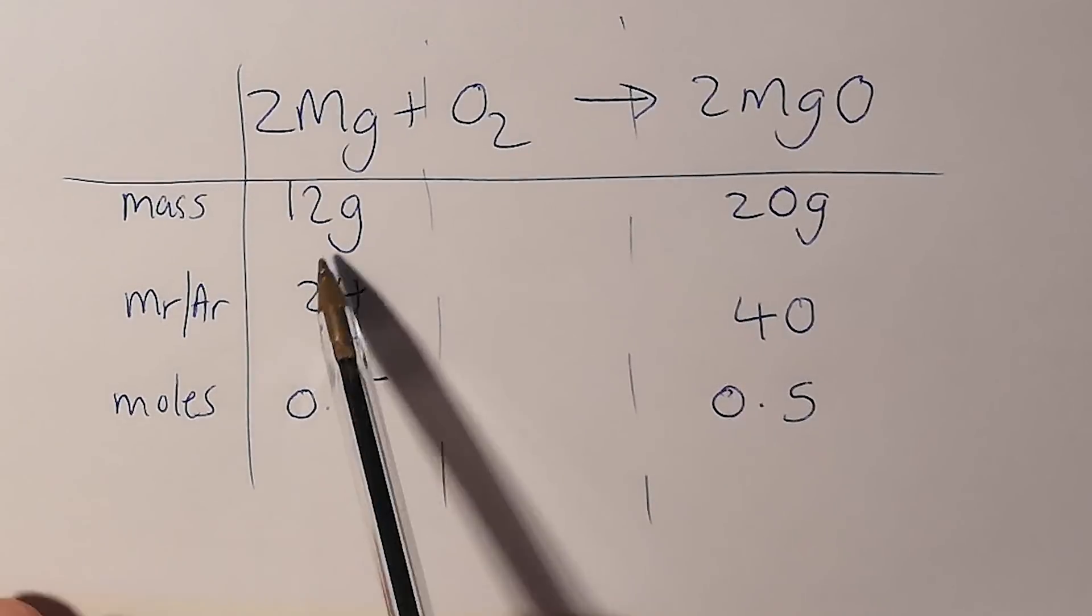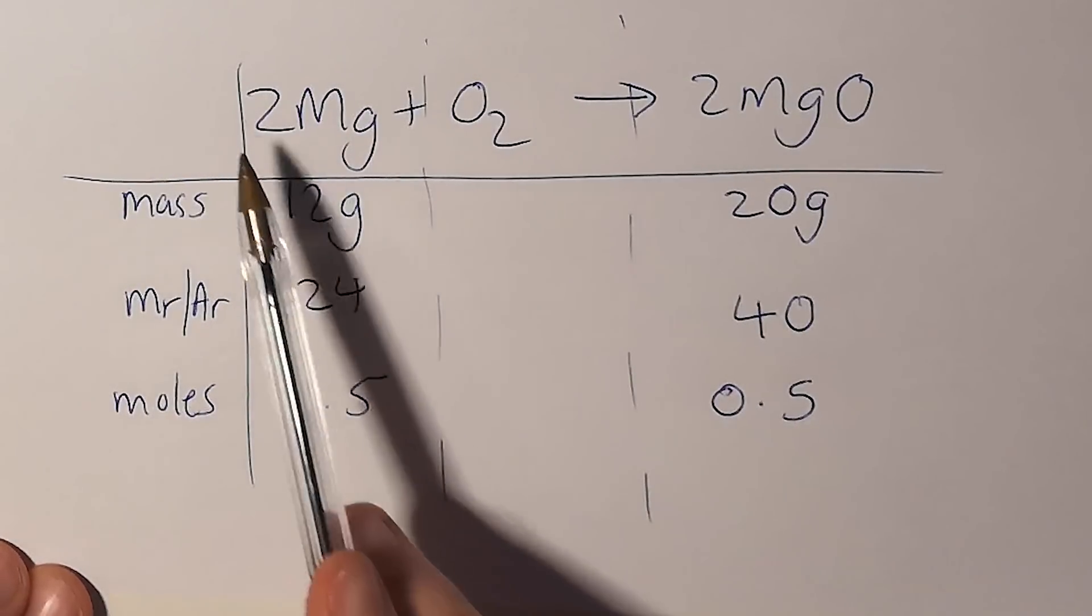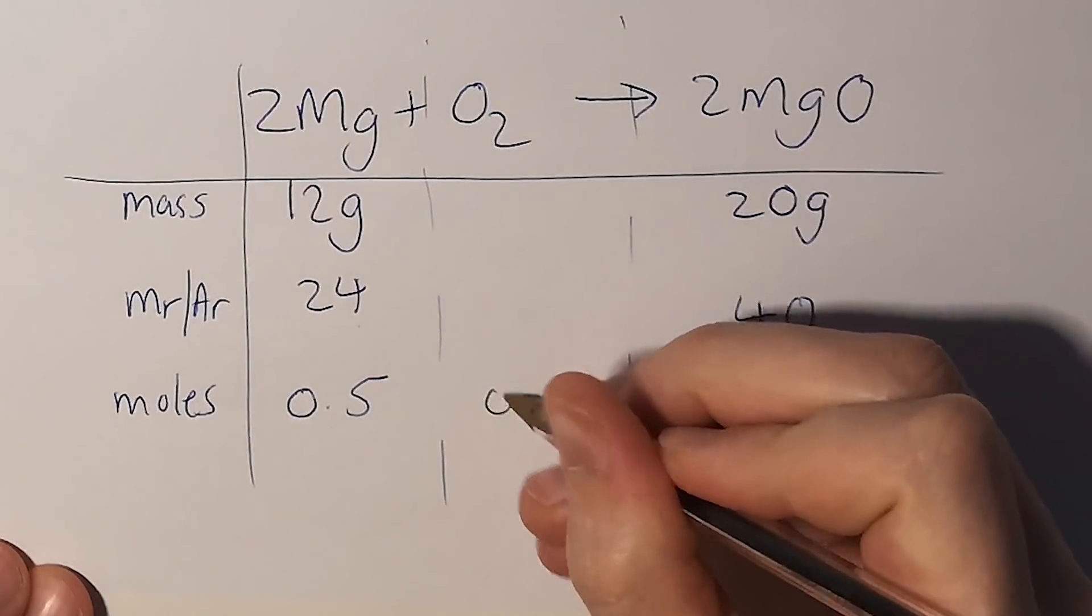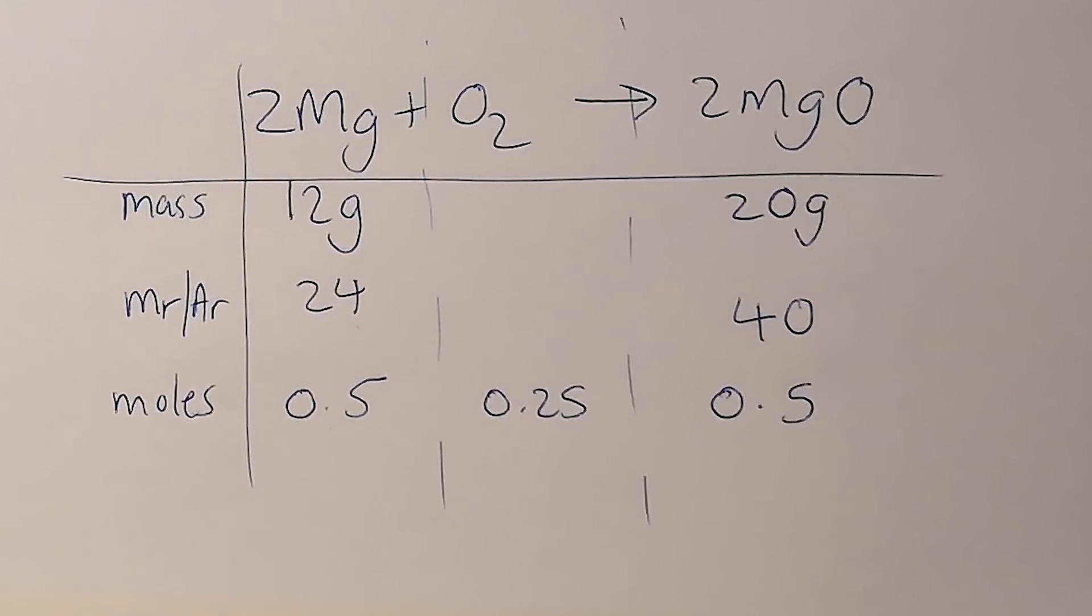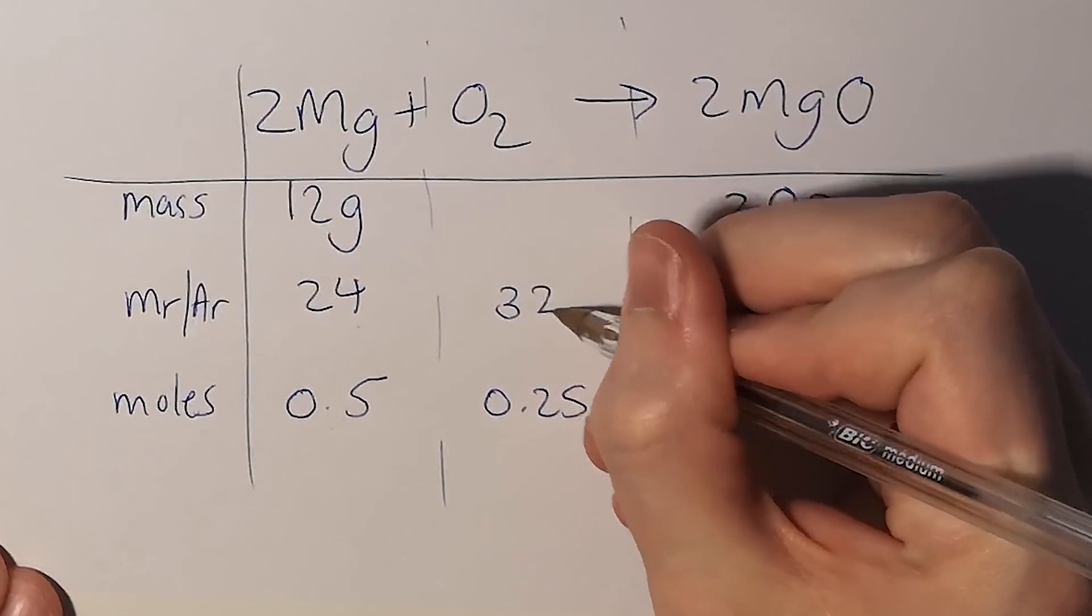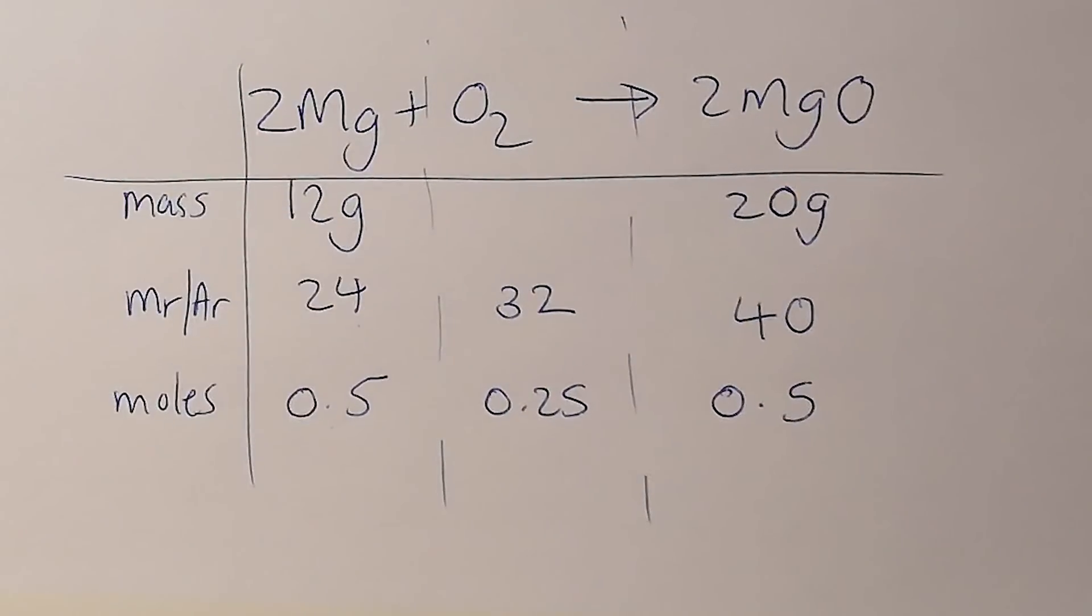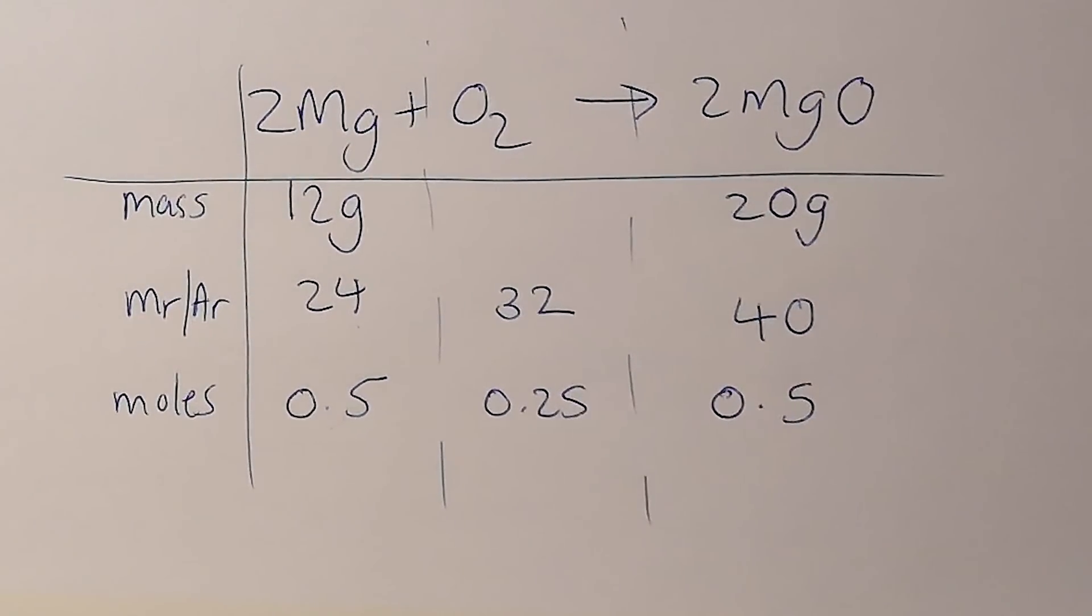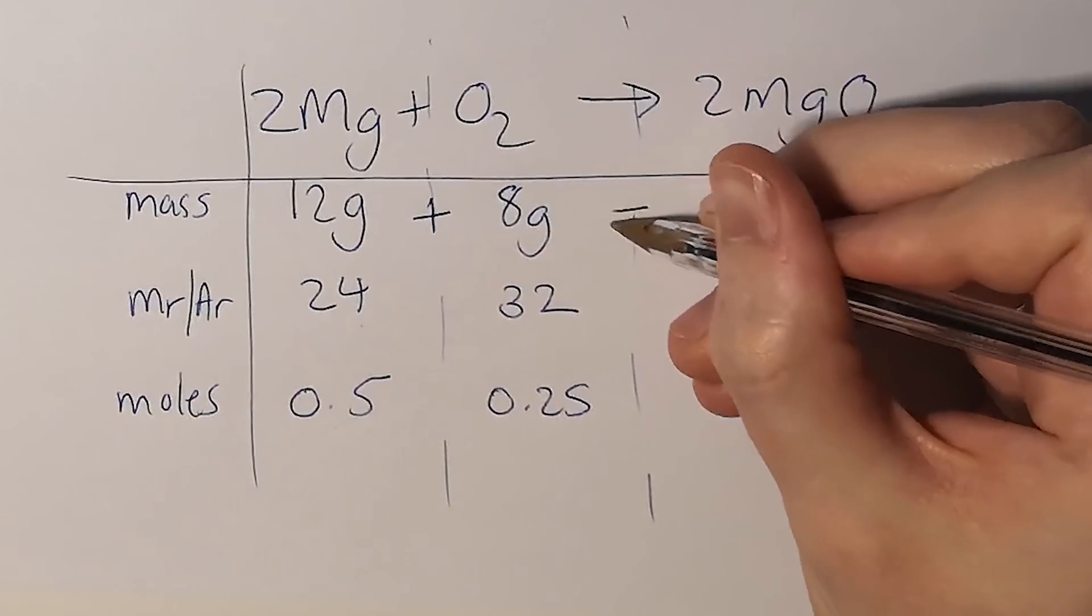Just to double check that we've done this correctly: if I've got 0.5 moles, how many moles of oxygen do I need? Well it's a two to one ratio, so I only need 0.25 moles of oxygen. The relative formula mass of O₂ is 32 because there are two oxygens. If I do 0.25 times 32, I get 8 grams. That adds up and agrees with conservation of mass: 12 grams plus 8 grams will make 20 grams of magnesium oxide.